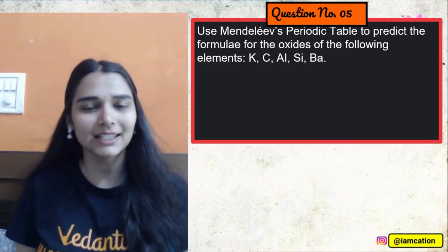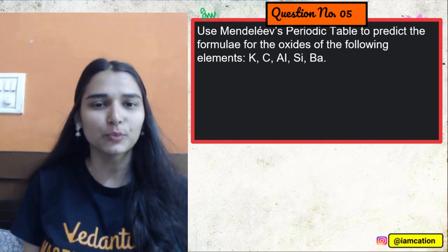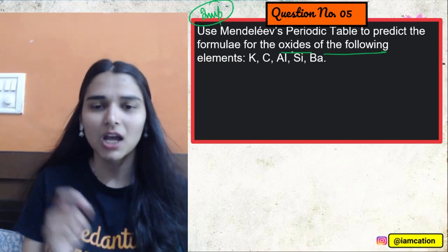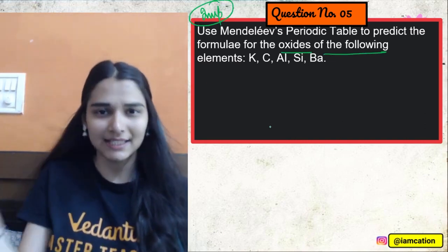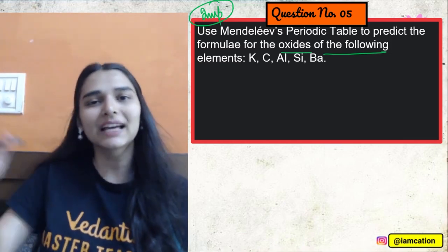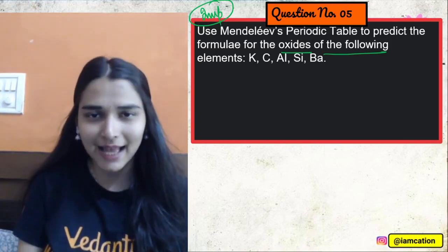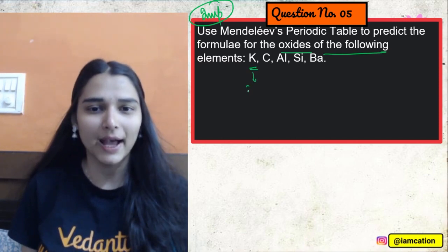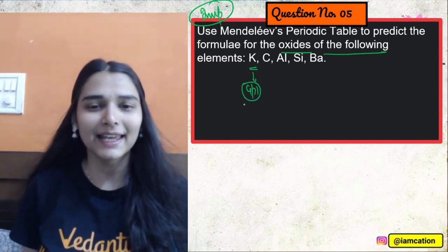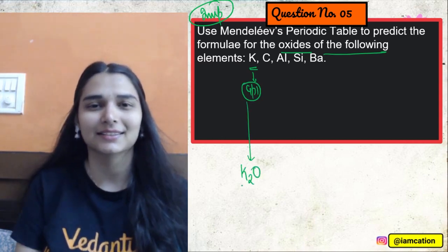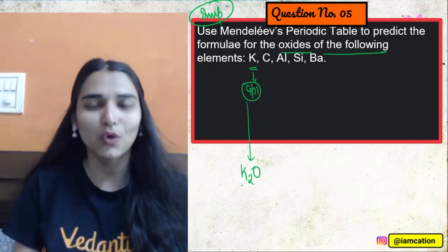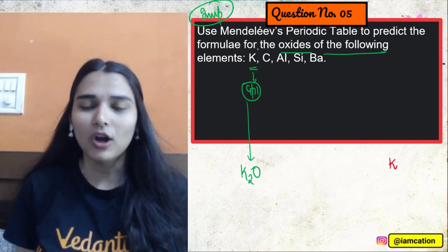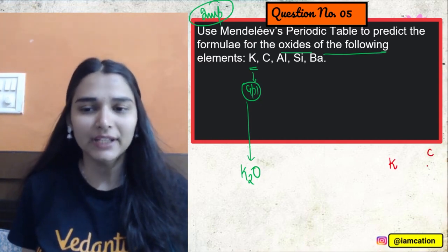Use Mendeleev's periodic table to predict the formula of oxides of the following. So guys, please watch this out. Formula of oxides and hydrides of the group. Common formula. One time. If in case it comes in the exam, you should be ready for it. Let's see. So potassium is from group number one. And group number one elements ke liye oxide ka formula is E2O. If E is the element.